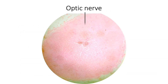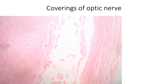The optic nerve, or the second cranial nerve, differs in its structure from other peripheral nerves. It is made up of more than a million myelinated nerve fibers, which are the axons of ganglion cells of the retina. The optic nerve is the link between the diencephalon and its diverticulum, that is the optic vesicle, and hence it is more apt to be considered as a tract rather than a peripheral nerve.